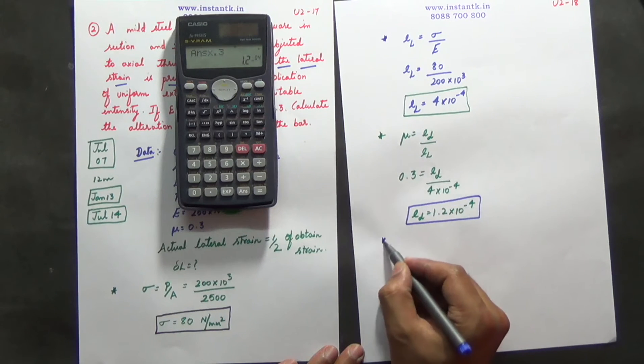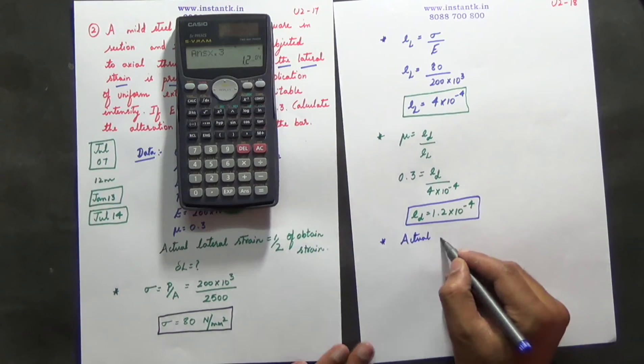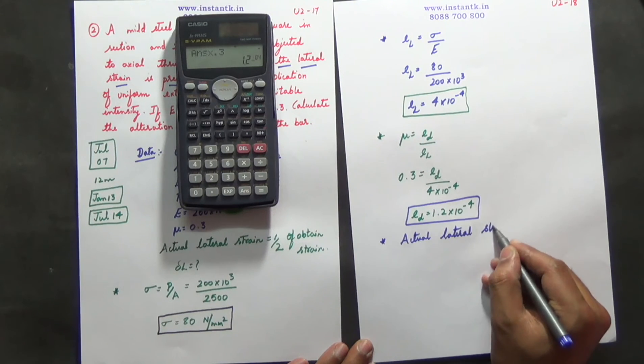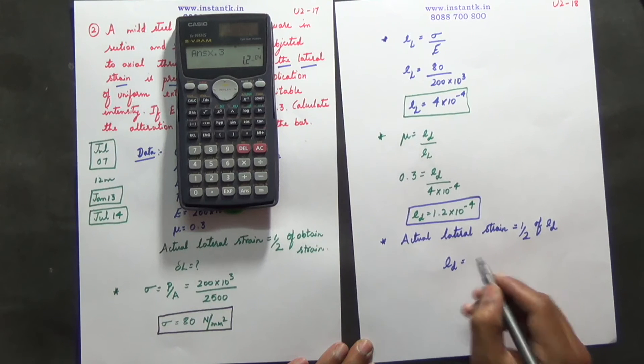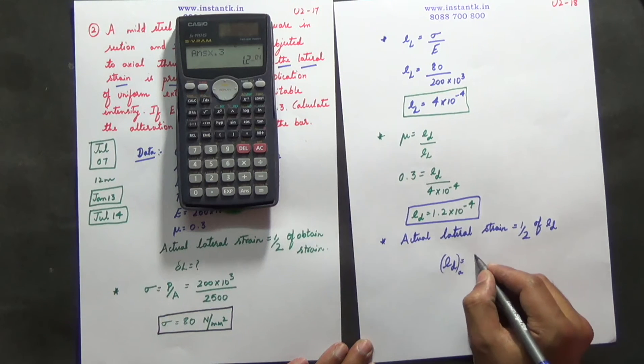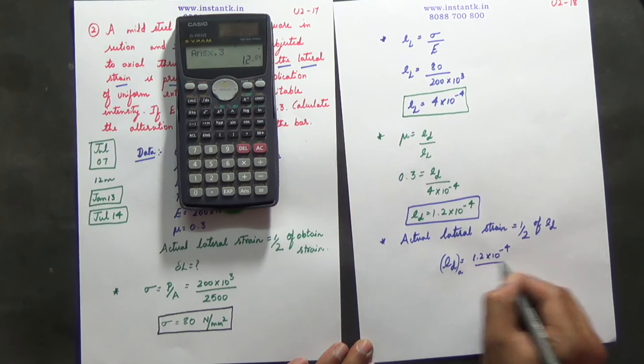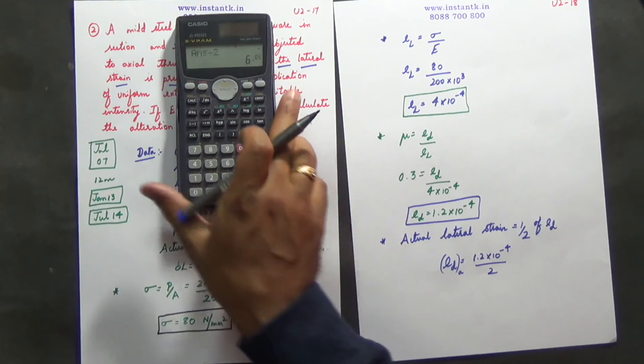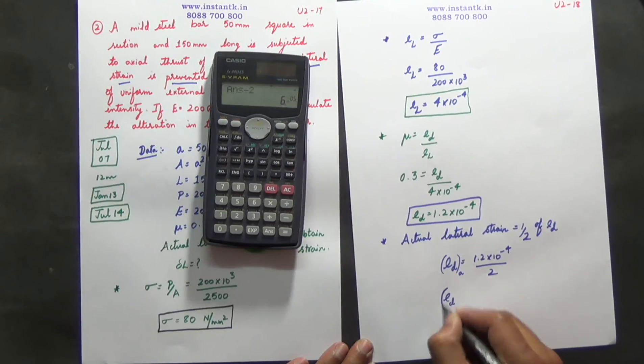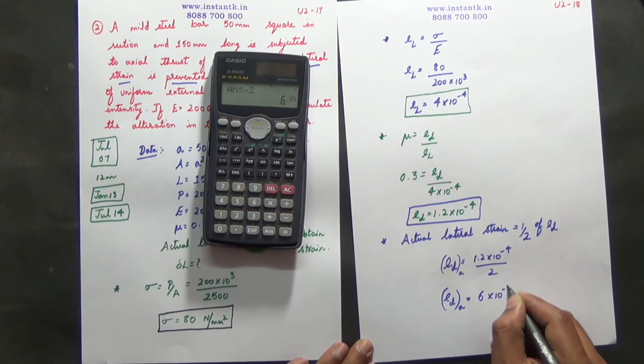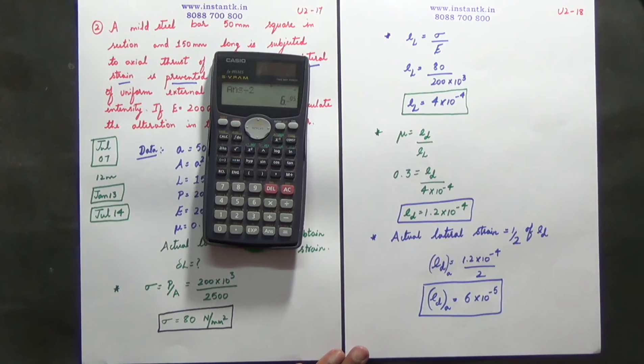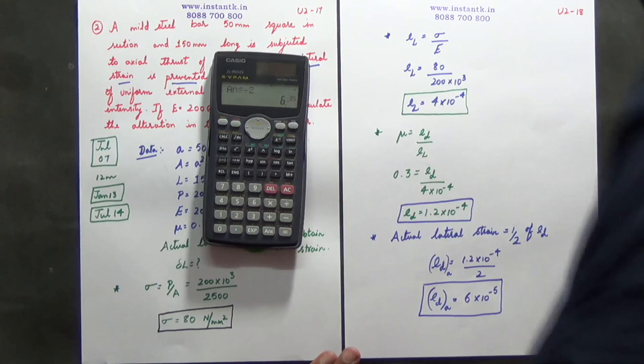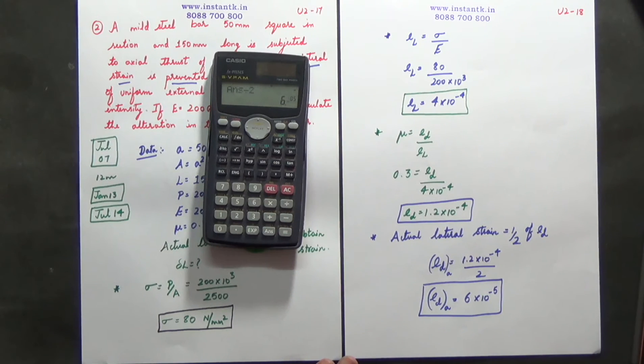Next step, actual lateral strain is equal to half of ed. Therefore ed actual is equal to 1.2 into 10 power of minus 4 divided by 2, you get 6 into 10 power of minus 5.